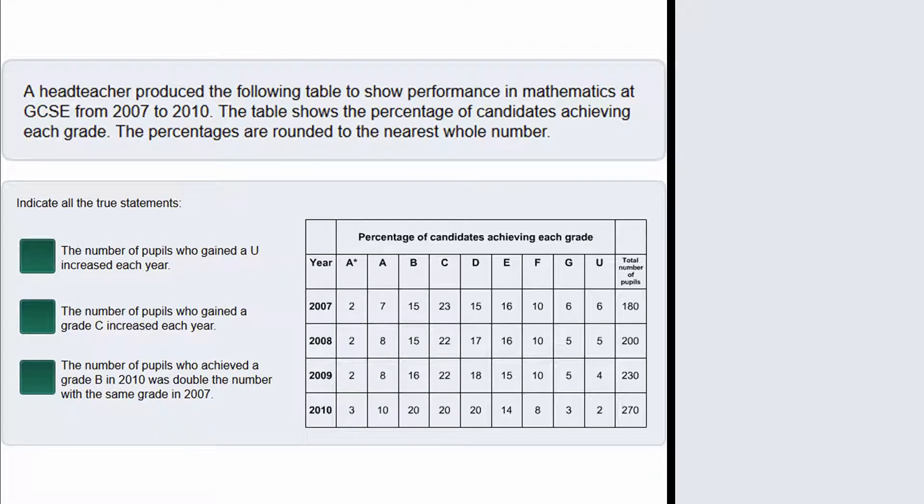Let's have a look at the second statement. The number of pupils who gained a grade C increased each year. We are going to have a look at this column here for the grade C, and this column here for the total number of pupils. In 2007, 23% got a grade C so we need to do 0.23 multiplied by 180 and that gives us 41.4.